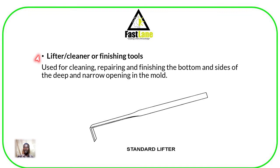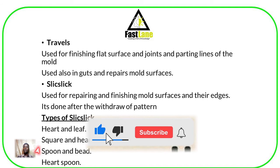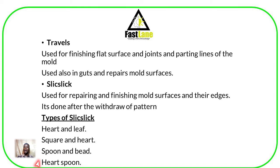Then we have a lifter, which can also be referred to as a cleaner or finishing tool. A lifter is used for cleaning, repairing, and finishing the bottom and sides of deep narrow openings of the mold cavity. We also have trowels, used for finishing flat surfaces, joints, and parting lines of the mold, and also used in cuts and repairs of mold surfaces. Then we have slicks, used for repairing and finishing mold surfaces and their edges after the withdrawal of the pattern. Types of slicks include the heart and leaf, the square and heart, the spoon and bead, and the hard spoon.